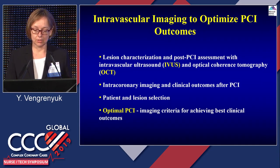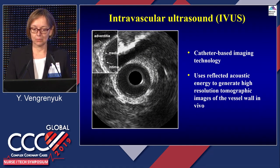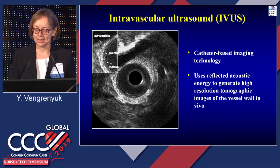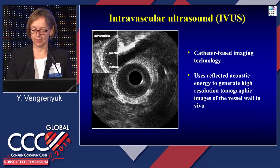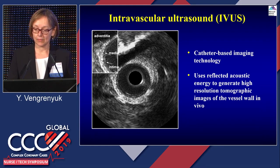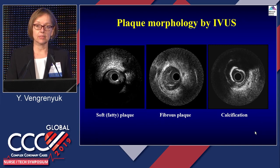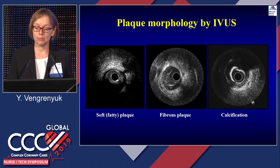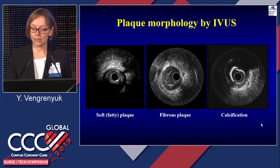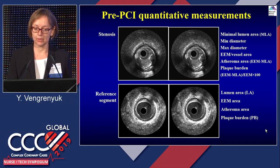Optimal PCI is a PCI which meets imaging criteria for achieving the best clinical outcomes. For more than 30 years, intravascular ultrasound has been a very important addition to coronary angiography in the cath lab. IVUS uses reflected acoustic energy to generate high-resolution images of the vessel wall. This is a healthy vessel wall with a three-layer structure — intima, media, and adventitia — very different from atherosclerotic lesions, which can be classified as soft, fibrous, or calcified plaque. This is a very important distinction for making decisions about lesion preparation.